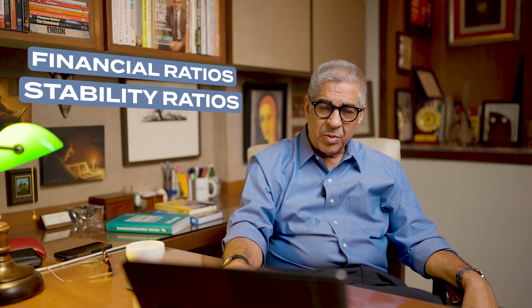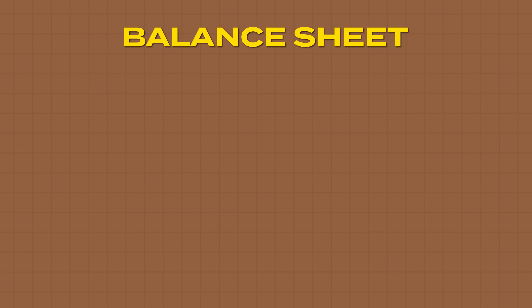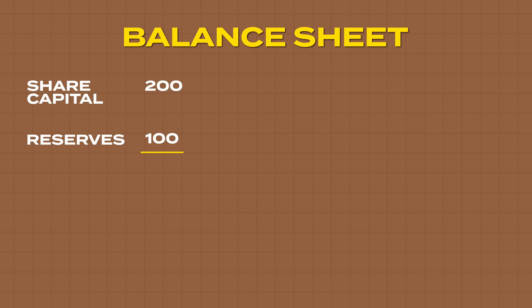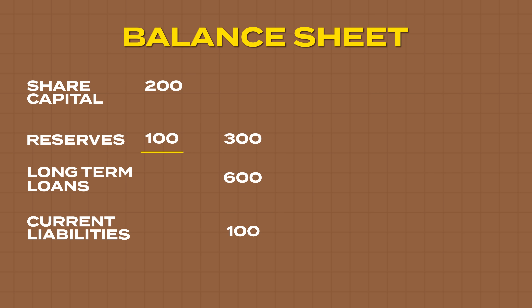The data for these ratios comes from the balance sheet. These ratios are either called financial ratios or stability ratios. Since the data comes from a balance sheet, let me show you one. Here is a balance sheet. It tells you the share capital of this company is 200. The reserves are 100. So the shareholders' equity — the net worth — is 300. Against 300, they have long-term loans of 600 and current liabilities of 100. Total of the liability side is 1,000.